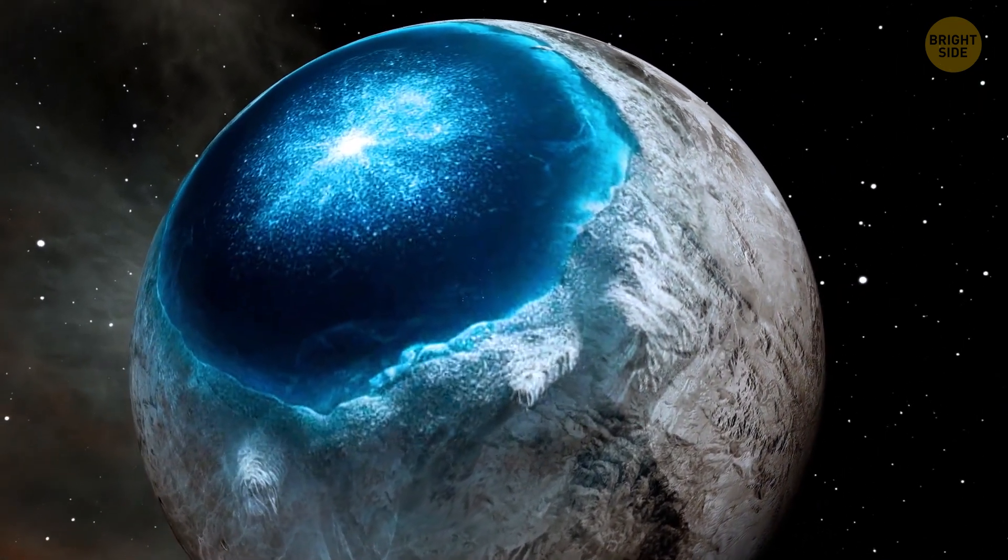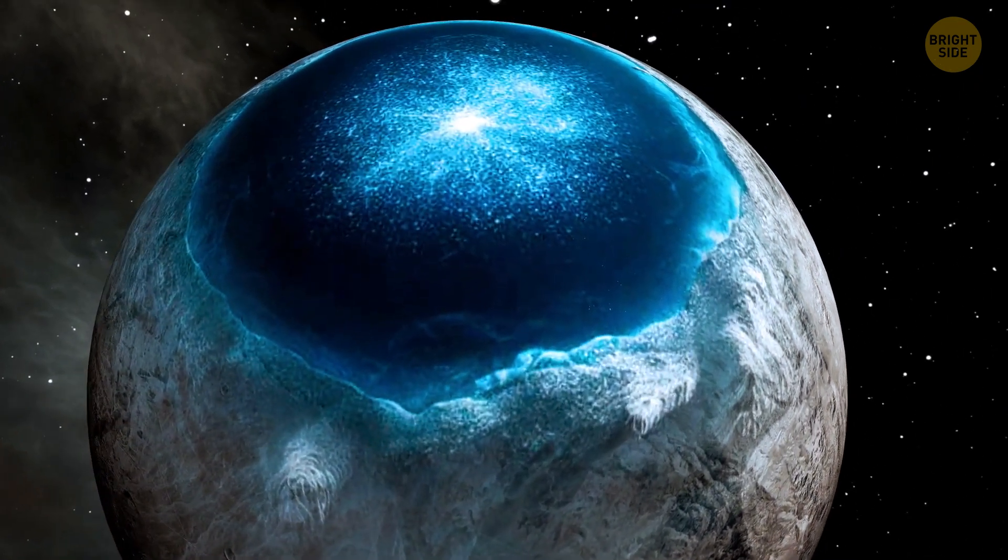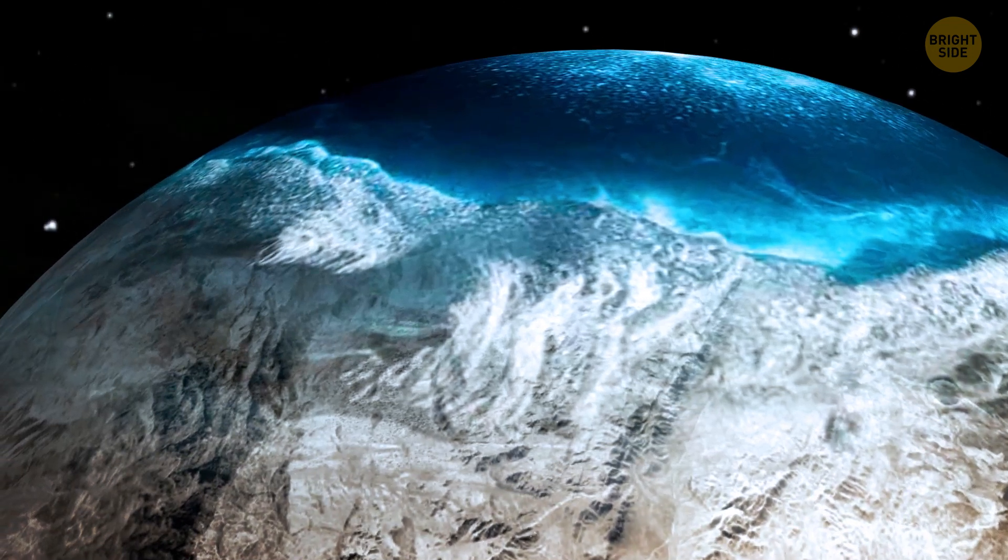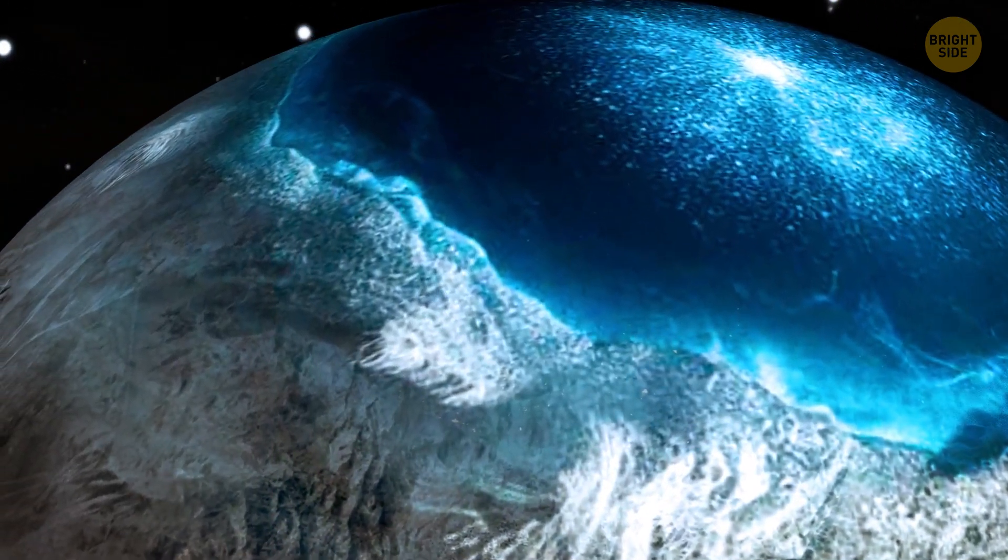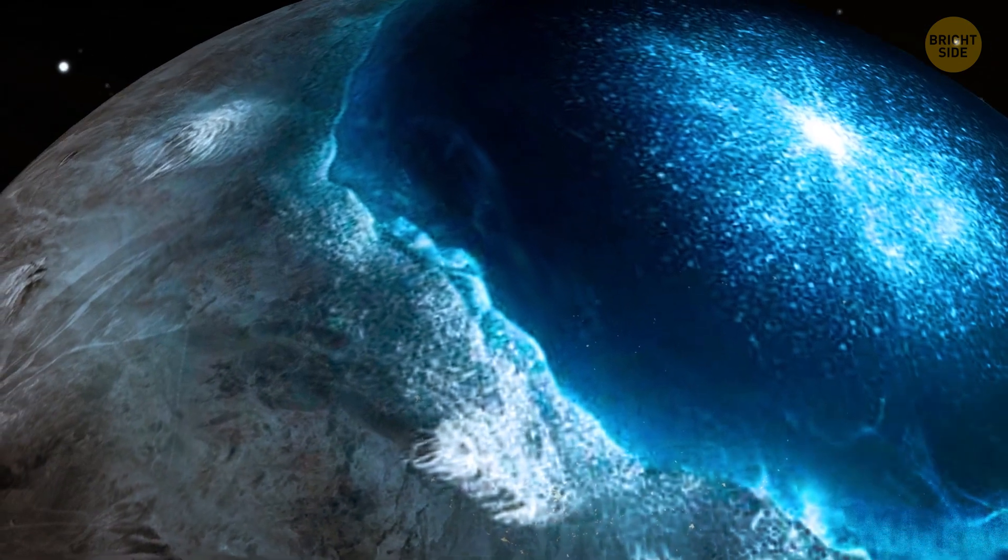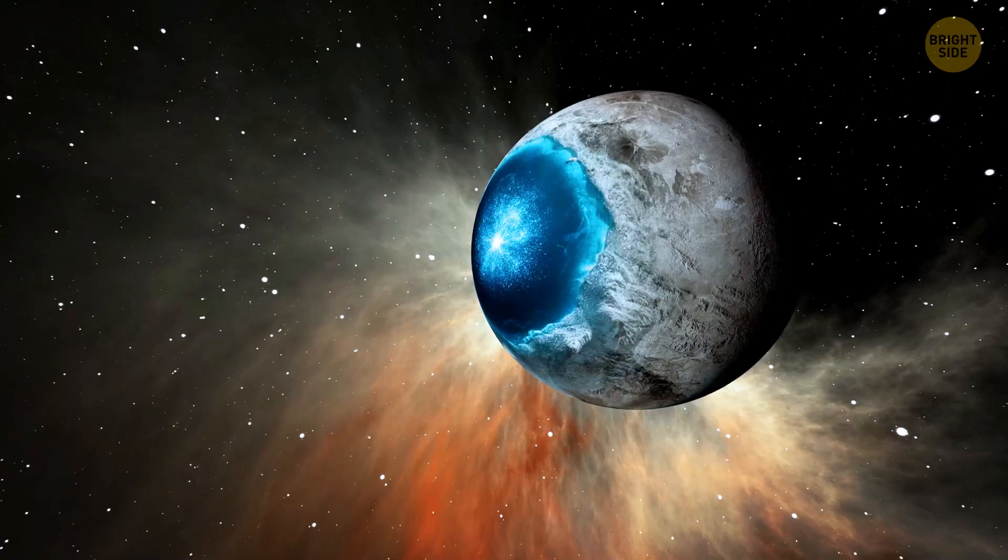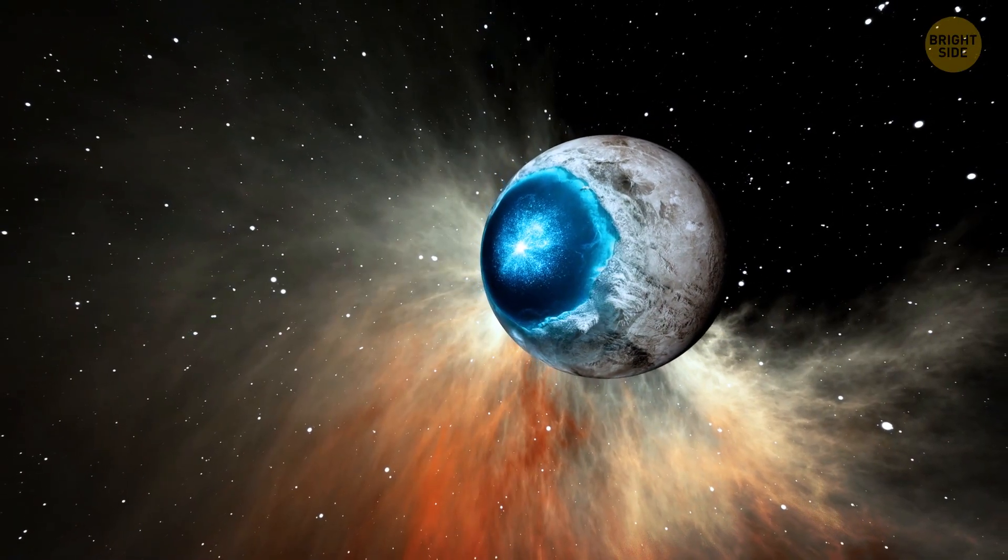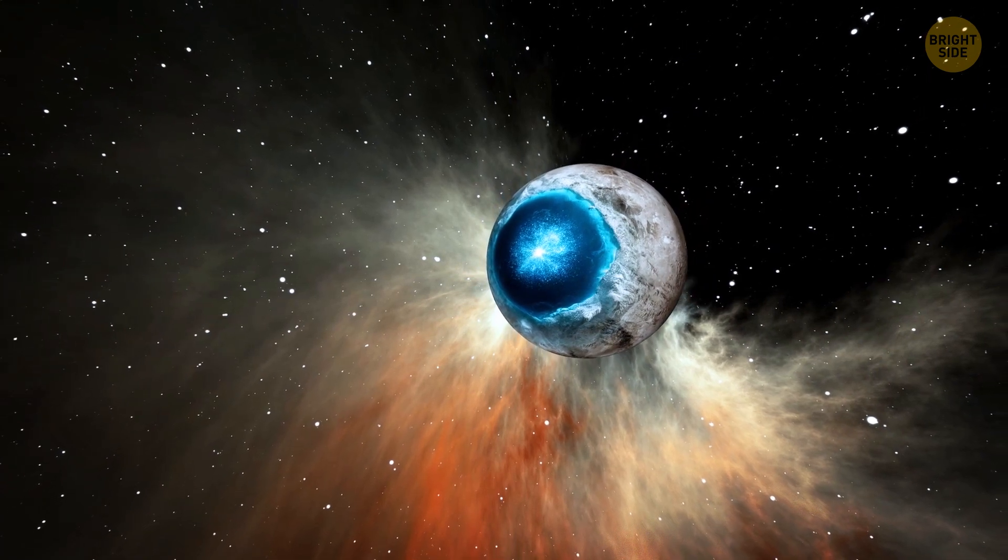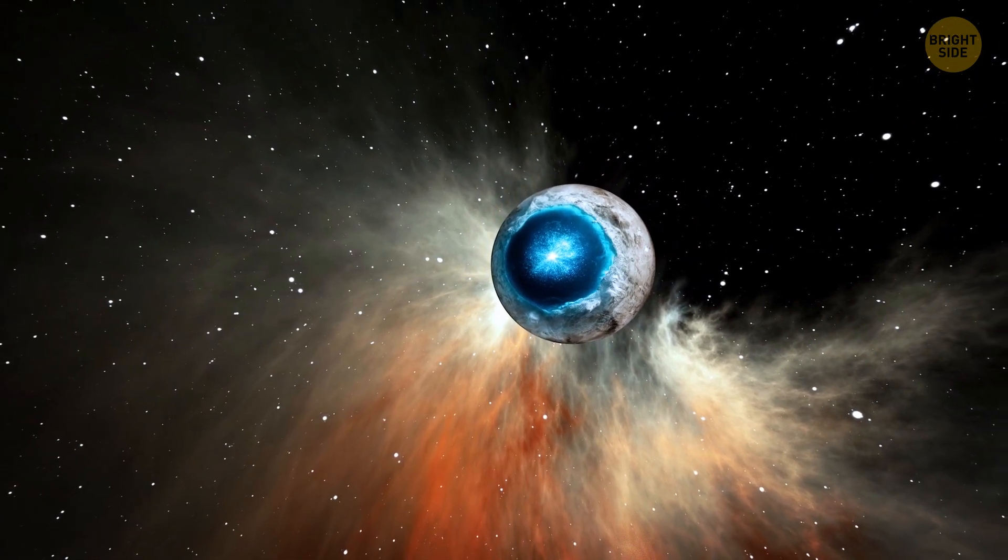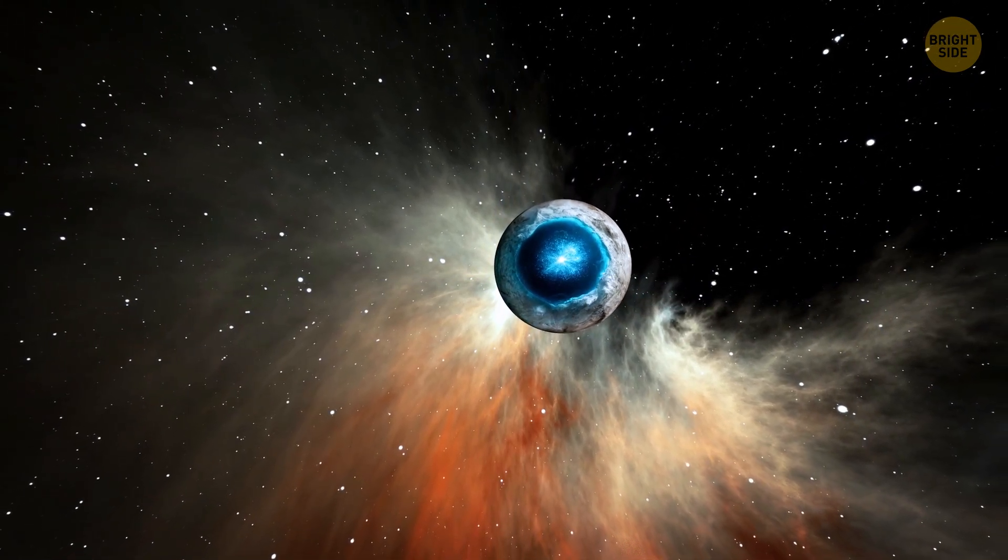That's why the exoplanet lies in the habitable zone of its star, where it's not so cold that all surface water would freeze, and not so close that this water would steam away. At the moment, LHS 1140b looks like the most promising candidate for hosting life in our planetary neighborhood.